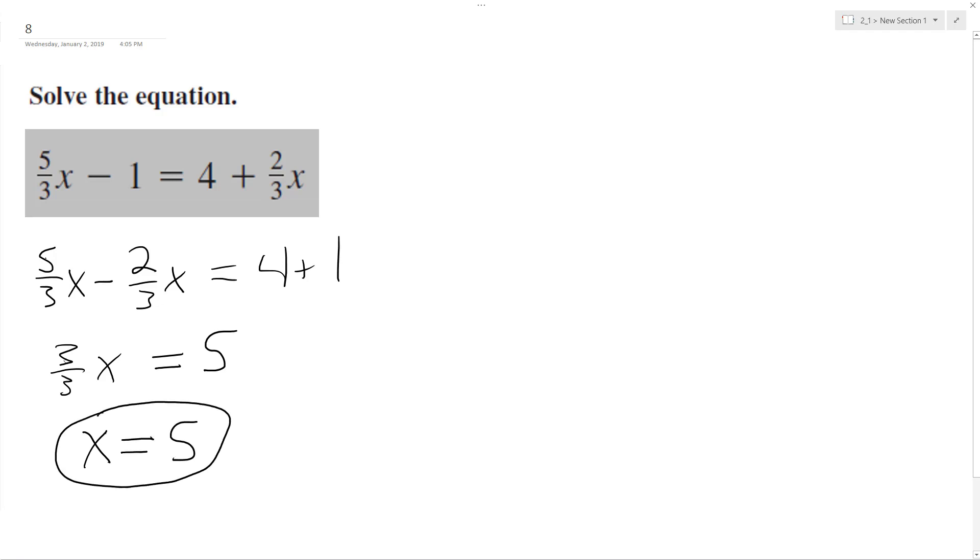So that's the correct answer. I can check this really quick by plugging this back in for x. So 5/3 times 5, substituting x with 5, minus 1 equals 4 plus 2/3 times 5.